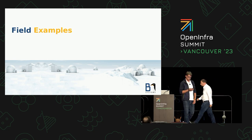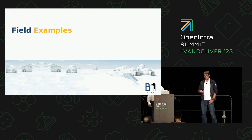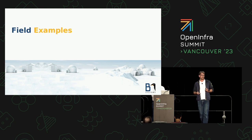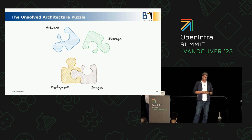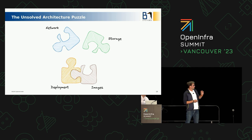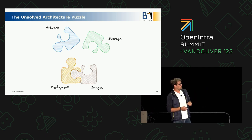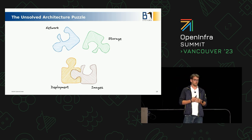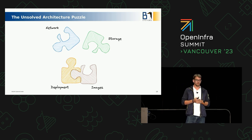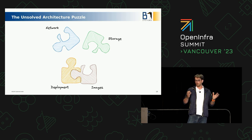Thank you, Markus, for the overview. As you already said, we face several problems when we go to a customer who wants OpenStack. I've tried to draw it as a puzzle — an unsolved architecture puzzle. There are already two solved and two unsolved pieces. The two unsolved pieces are: first, the network. And you would probably agree that deploying a network on the customer side is sometimes quite challenging.